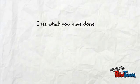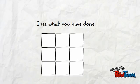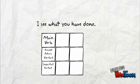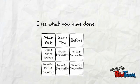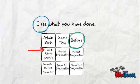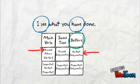Let's look at this sentence next to the sequence of tenses chart. This chart is the key to using the right tense at the right time. First, we look at the main verb and determine what tense it is in. Then, we decide if the second verb happens at the same time as or before the main verb. Because 'I see' is in the present tense and what the person did happened before I saw it, the tense we should use for 'you have done' is the perfect subjunctive tense.